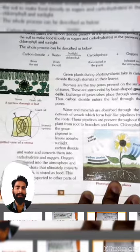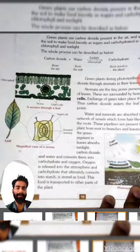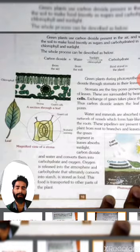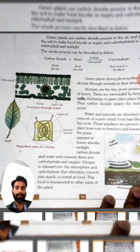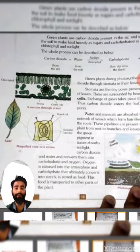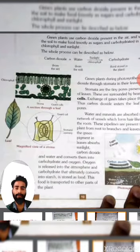Chlorophyll, the green pigment in leaves, absorbs sunlight and converts carbon dioxide and water into carbohydrate and oxygen. Oxygen is released into the atmosphere, and the carbohydrate ultimately converts into starch, which is stored as food. This food is then transported to other parts of the plant.